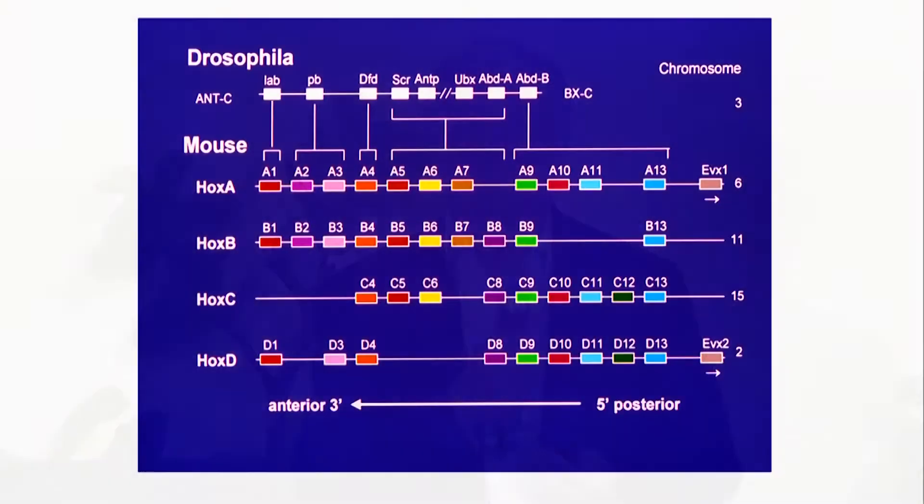We got into this work by serendipity. We work on Hox genes. Hox genes are an interesting set of genes because they're involved in making the body plans of all multicellular animals. In particular, what they're interested in doing is giving you a sense of direction — your axes. What we call the anterior-posterior, which is your main body axis, and also minor axes, for example your limb — proximal, distal, and up and down on the hand. All of these axes are encoded by these proteins, which are all transcription factors that turn genes on and off.